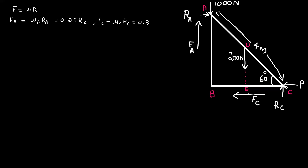That is equal to 0.35 RC. Now, for the sum of Fx equal to zero: RN minus FC minus P equals zero, therefore RN equals FC plus P.